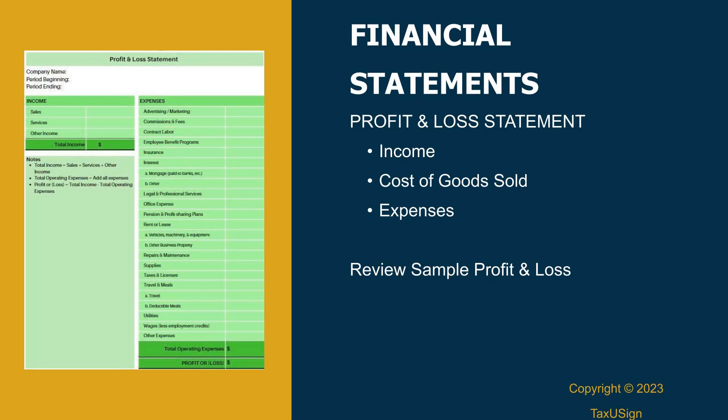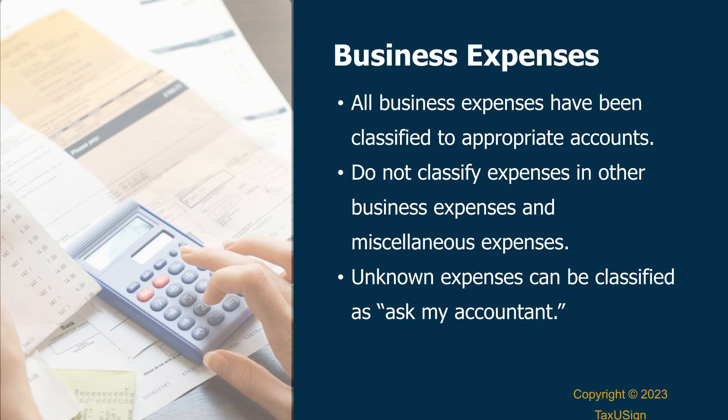Misclassifying expenses such as confusing operating expenses with capital expenses is a common error. For example, assets that are more than $2,500 are capital assets that may be depreciated. Overlooking depreciation can impact the true cost of assets over time. Other misclassifying expenses include auto and home office. When you use your business card to pay for personal expenses, it needs to be properly documented. Check out the most common tax mistakes made by small businesses book to learn more. Make sure all expenses are categorized — not in miscellaneous or other business expenses. When you aren't sure, create a new category called 'Ask My Accountant' and add descriptions of the transaction. This will allow the professional to help you identify which category it belongs to.